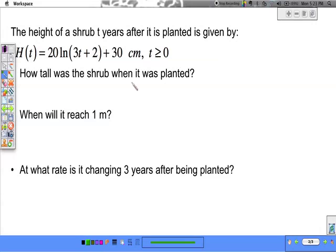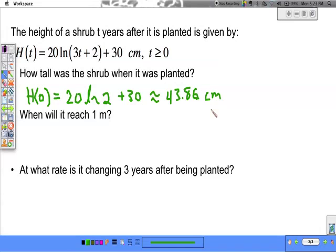Well, it was planted at t equals 0. So let's plug in t equals 0. h of 0, 20 natural log of 2 plus 30. And that's a matter of plugging in the calculator. And we get approximately 43.86 centimeters.